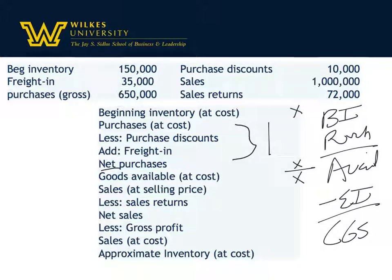If we can take what's available minus ending inventory and get cost of goods sold, we can also take what's available minus cost of goods sold and solve for ending inventory. The question becomes: how much was really sold? In this case, we don't have all the information, but we do have information at the sales rate — so we know what was sold. If we know what was sold and we know the markup, we can figure out the cost of goods sold.